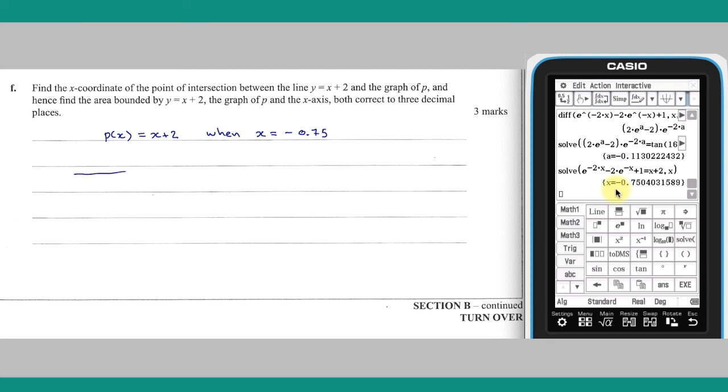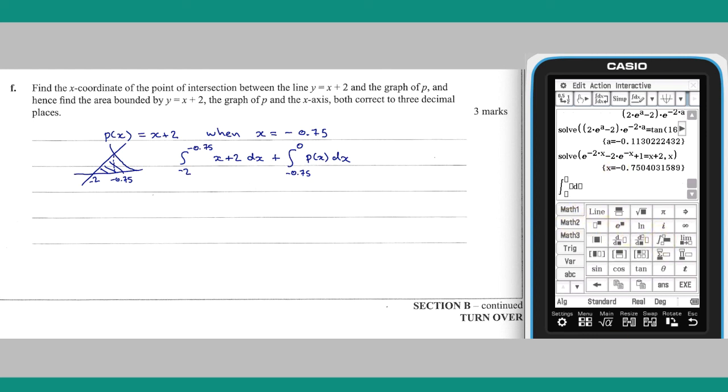With this value known, the area bounded by the graph of P, the line Y equals X plus 2, and the X axis can be found. This can be done by evaluating the following definite integral. Thank you.